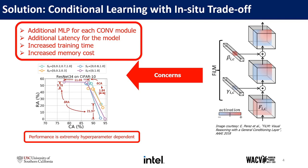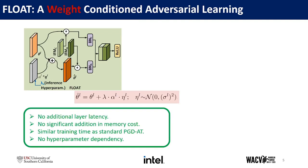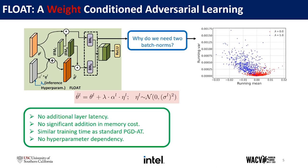To that end, in this work we present a novel weight-conditioned once-for-all adversarial training. In particular, we present a conditional noisy weight tensor that gets combined with the feature map, using a noisy path if the input feature map is associated with adversarial images. We also decouple the two batch normalizations associated with clean and adversarial images due to their significantly different running statistics. Our FLOAT model has no additional layer latency, no significant addition in memory cost, similar training time as standard PGD adversarial training, and no hyperparameter dependency.